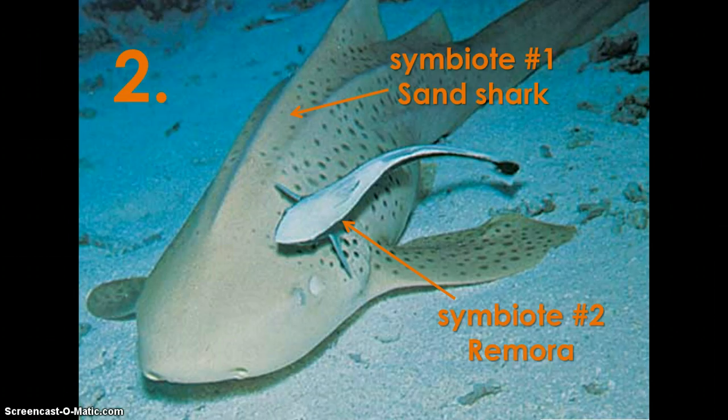Example number two: symbiote number one is a sand shark, and symbiote number two is a remora. In this example, the remora hangs tight to the sand shark as a form of protection.